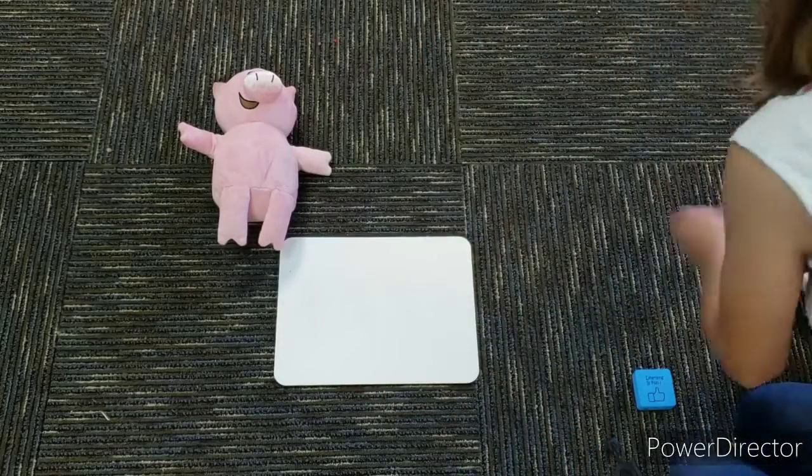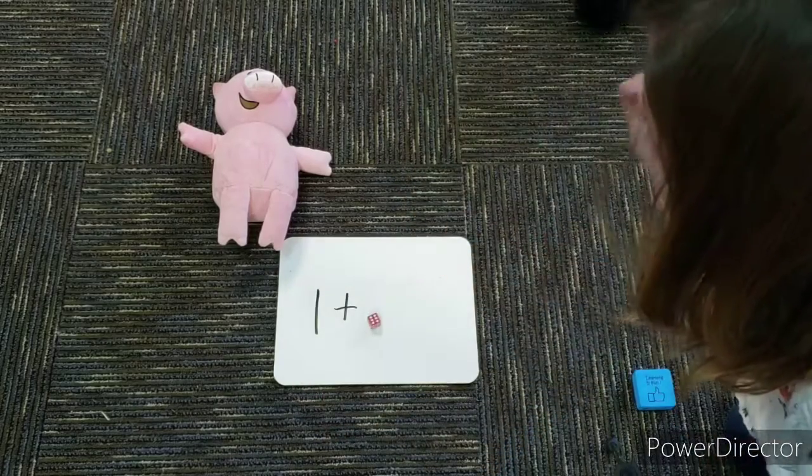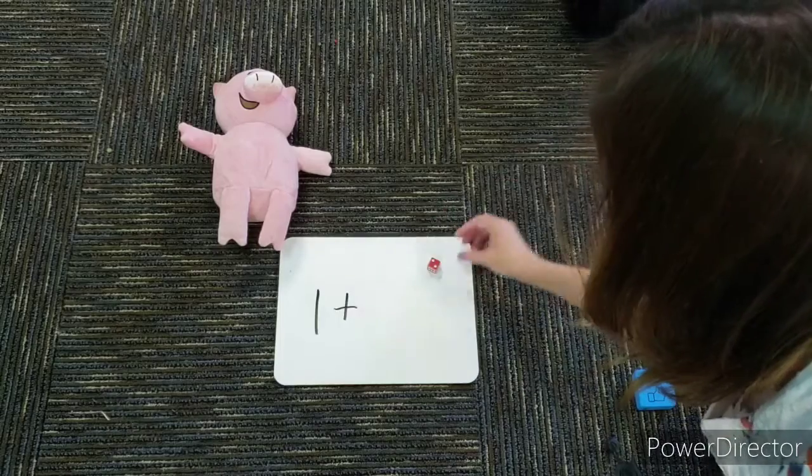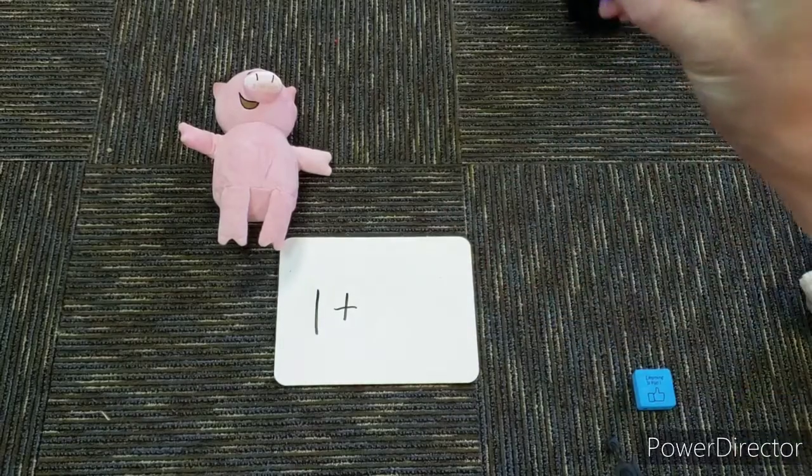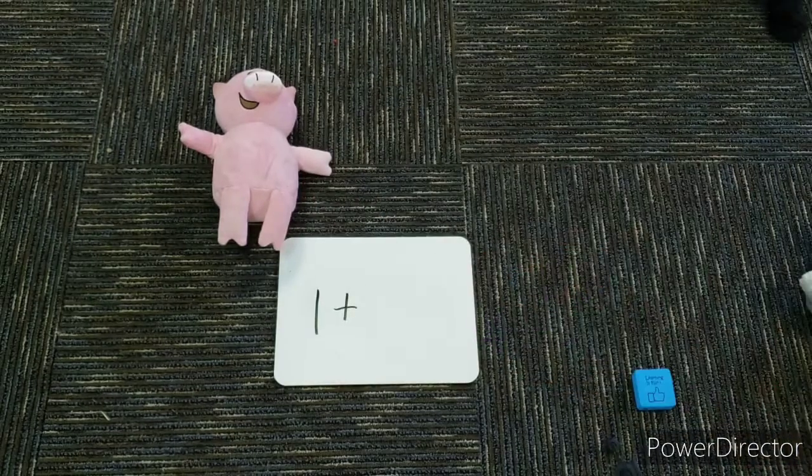Start off with one stuffy. I'm going to roll the dice. Oh, I got six again. Let's do a different one so you have a different example. Here is the number two. So now I have to add two stuffies.